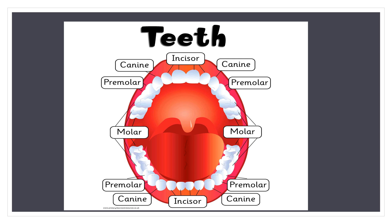Apart from that, there are 4 wisdom teeth. These teeth erupt at around the age of 18 but are often surgically removed to prevent displacement of the other teeth. The crown of each tooth projects into the mouth, and the roots of each tooth descend below the gum line into the jaw.